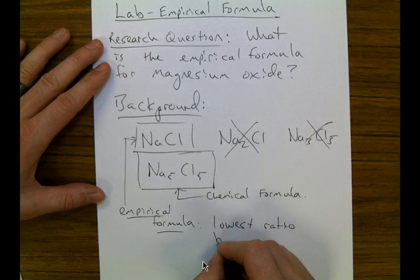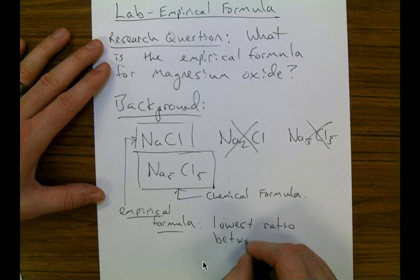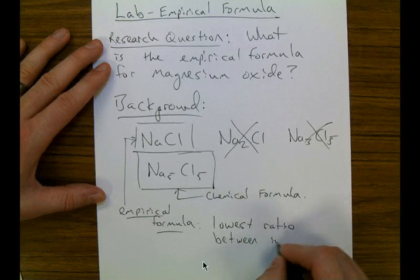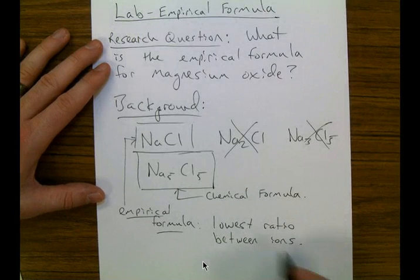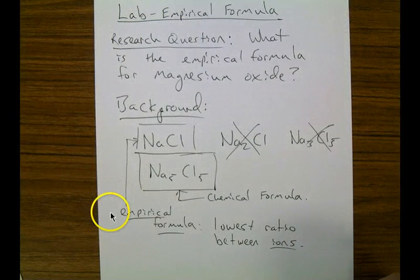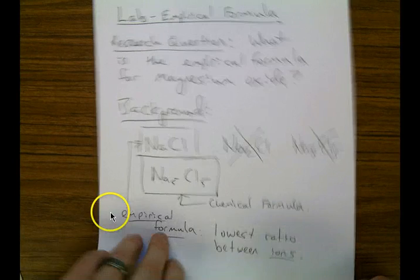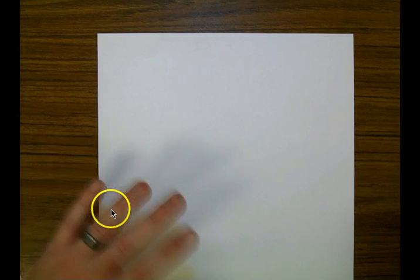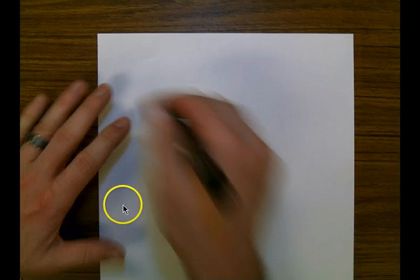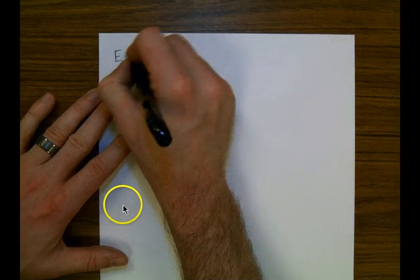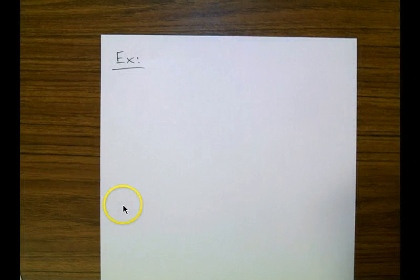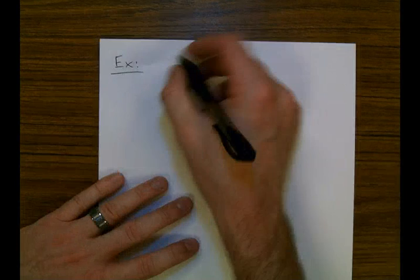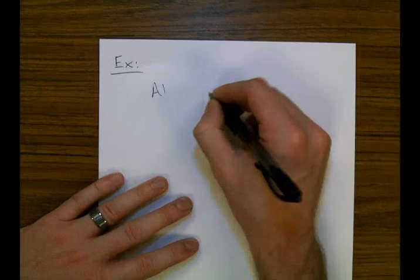We're going to say between ions in this lab. So for this lab, we're dealing with ions that are bonding together. So how do you figure out what an empirical formula is? What we need to know is how much of each element is bonding together. I'm going to use an example to help us figure out the math necessary — the empirical formula between aluminum and oxygen.